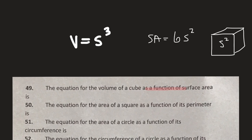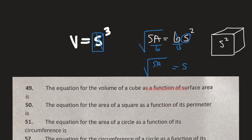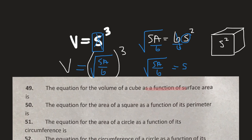So as a function of its surface area — this is the hard part. We have to get rid of this s. So I want to solve for s in the surface area equation. I divide by 6 and then take the square root. So my side length is the square root of the surface area divided by 6. That comes over here, and I'm going to cube that. So that's the formula for the volume of a cube as a function of surface area.